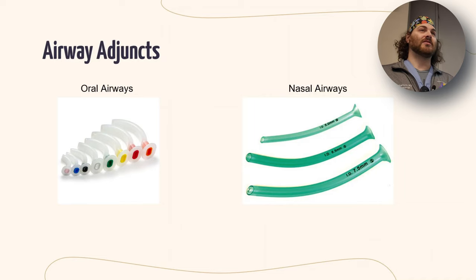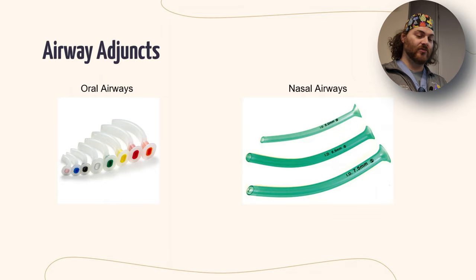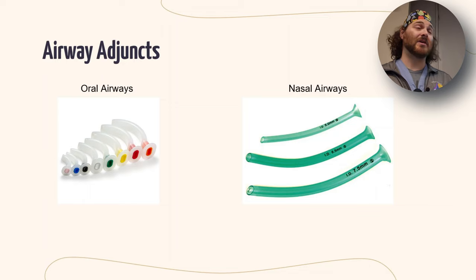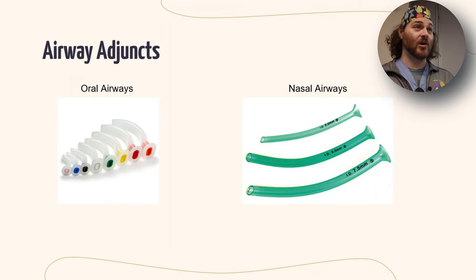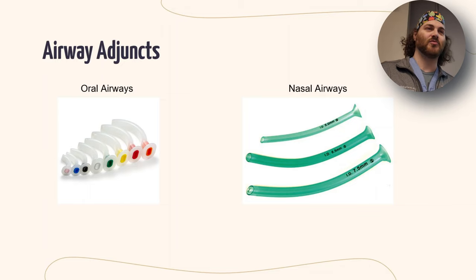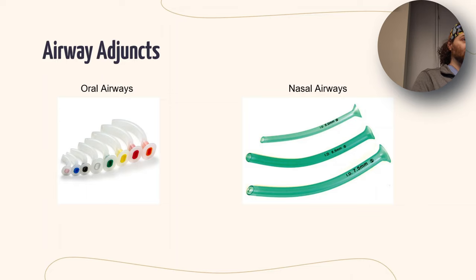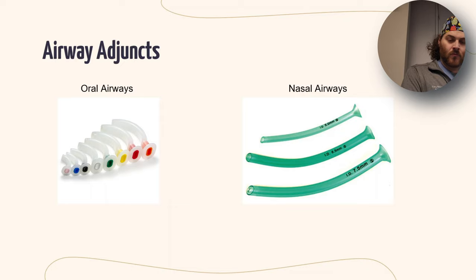Airway adjuncts are things I use to help with a mask airway situation. We've got oral airways and nasal airways — very common here. Oral airways are color-coded based on size for every 10 millimeters, so it's much easier to say 'get me a yellow airway' than to read imprinted plastic. Nasal airways are usually sized by French or by millimeter like an endotracheal tube — so if I used a 7.0 endotracheal tube, I might use a 7.0 nasal airway as well.